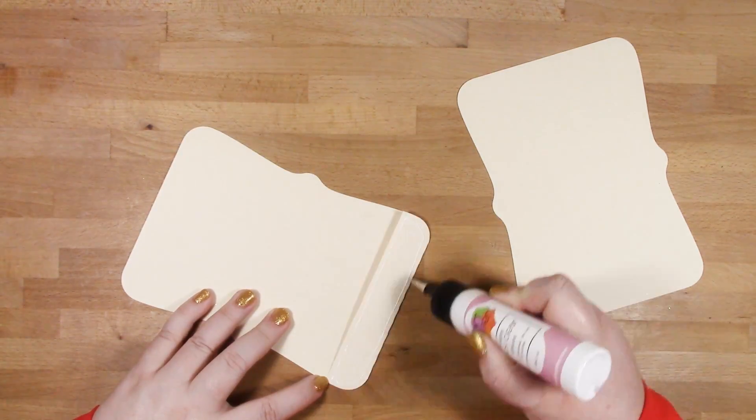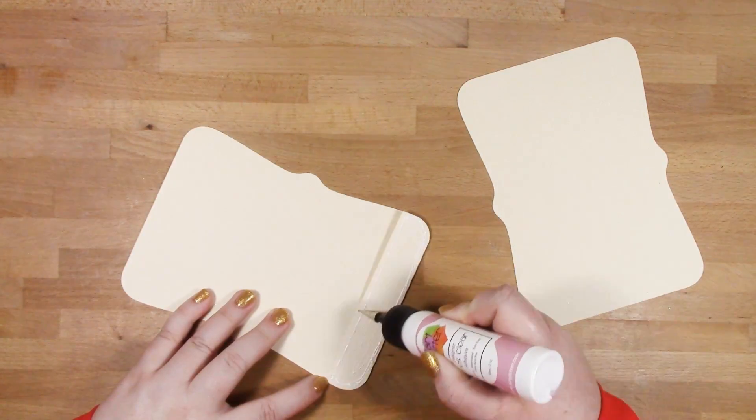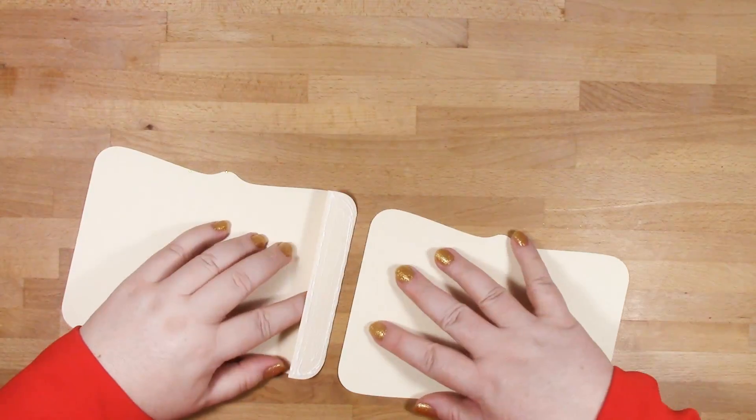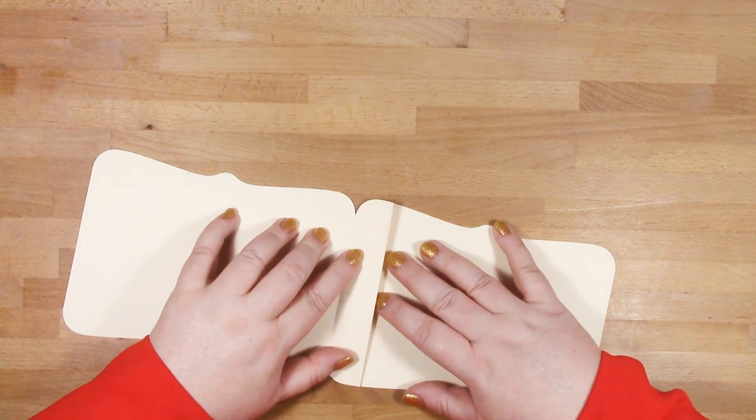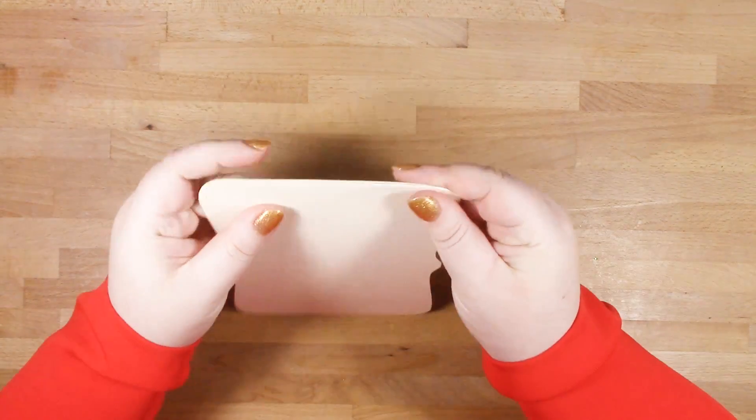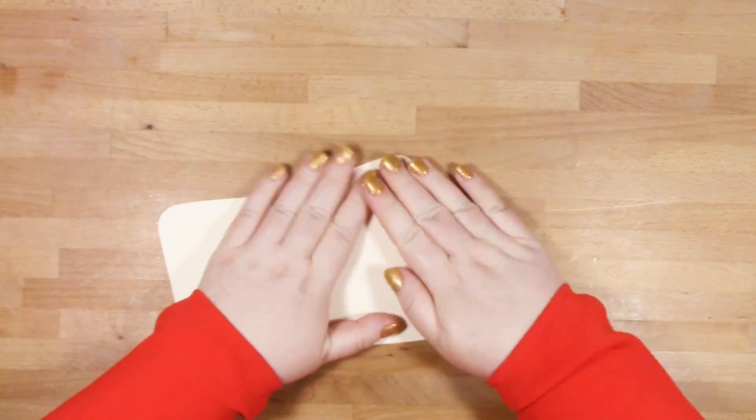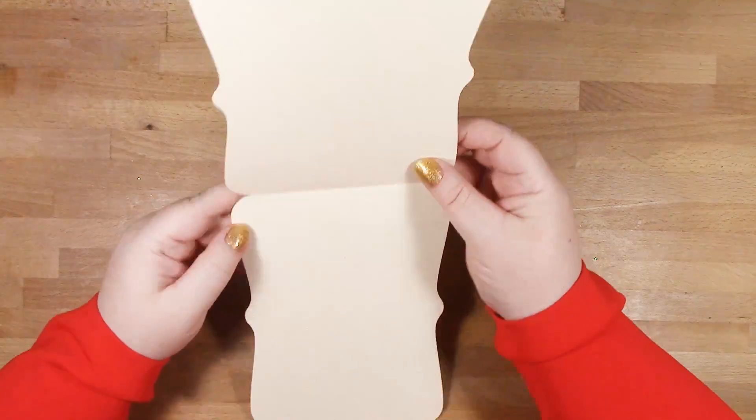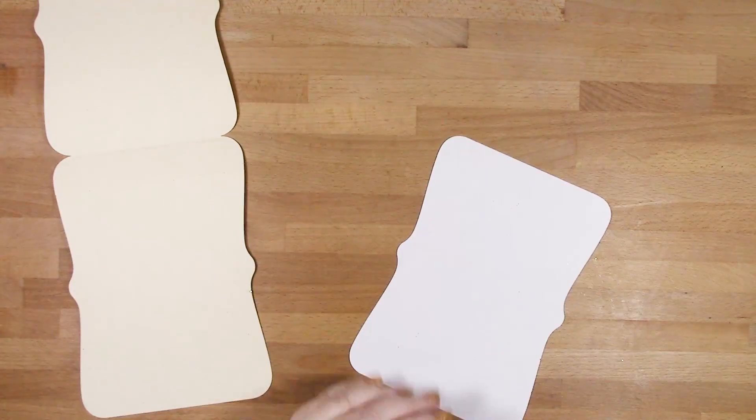You've got a glue tab here. You want to put some glue on to join the two parts together. Now you want to ensure that your textured side of your card is outward facing and the tab is on the inside. So you don't want the tab to be on the outside of the card. You must make sure it's on the inside.